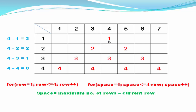Now we need another loop to print numbers. You can see that in each row multiple numbers are printed, equal to the current row number. In the first row it prints one number, in the second row two numbers, in the third row three numbers, and so on. The loop starts from one and goes up to the current row number, written as: for column equal to one, column less than or equal to row, then column plus plus. These are the three loops we will use in our program.